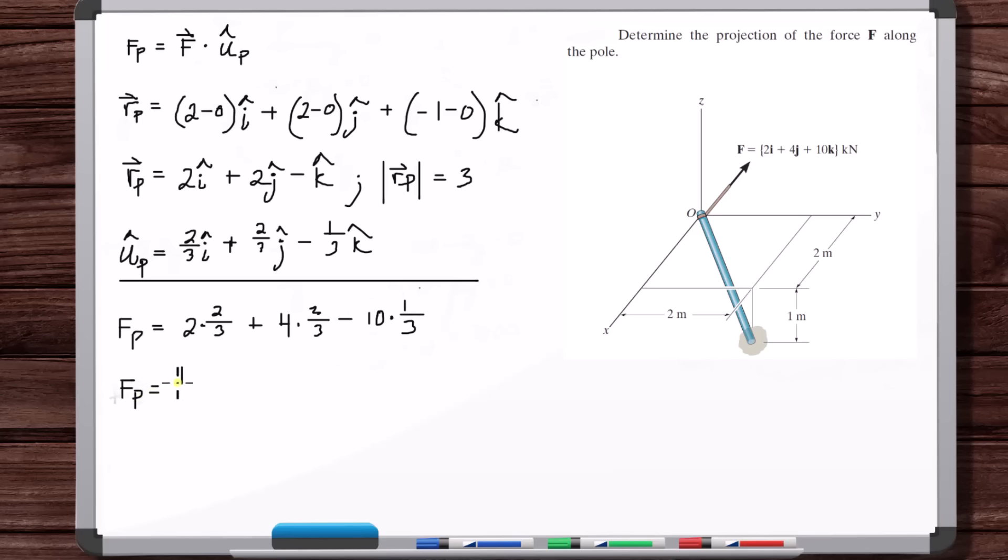So 4/3 plus 8/3 minus 10/3. 12 minus 10, so 2/3. That's Fp. And if we wanted this force vector, we would just say this magnitude times the unit vector. But they don't ask us for that.